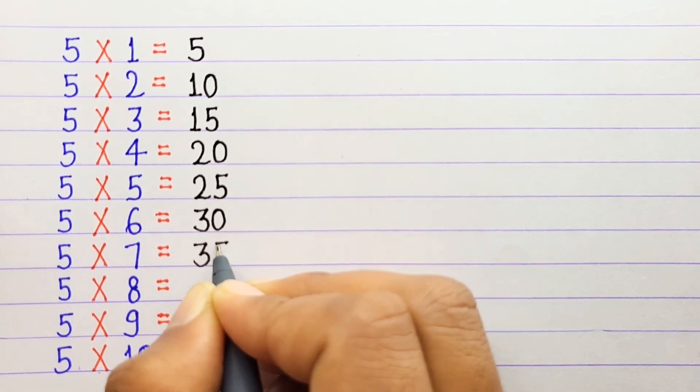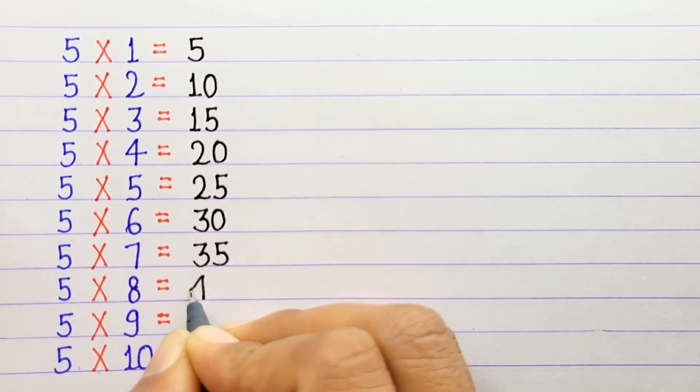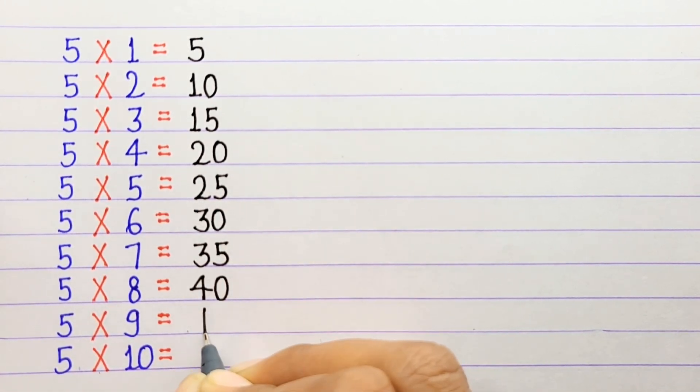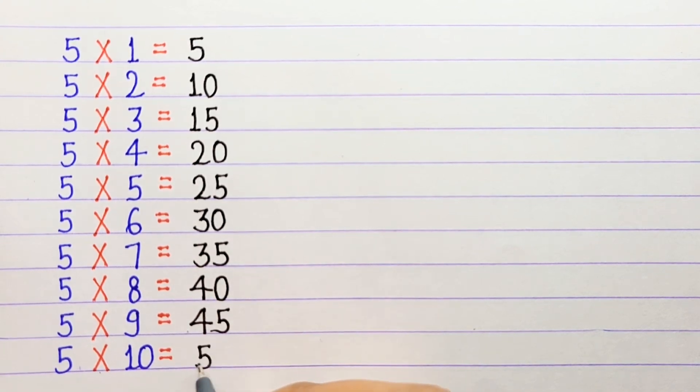5 times 7 is 35, 5 times 8 is 40, 5 times 9 is 45, 5 times 10 is 50.